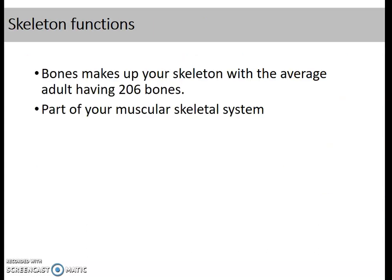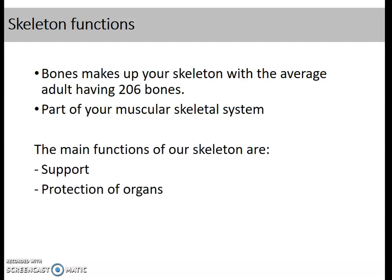The bones make up your skeleton, and the average adult has 206 bones — this is part of your musculoskeletal system. The main functions of the skeleton are: support, protection of organs, movement, and the making of blood cells. The making of blood cells actually occurs inside your bones, in something called bone marrow — you can research that for extra information.